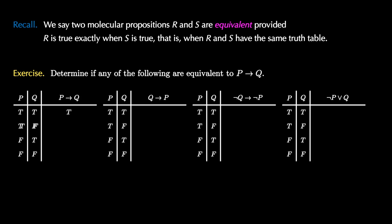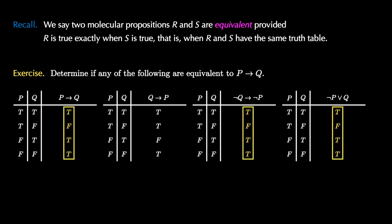Using the truth table for implies, we can rewrite p implies q as TFTT. Then q implies p has TTFT, NOT q implies NOT p is TFTT, and NOT p or q is TFTT. Inspection of these four truth tables shows that the first, third, and fourth are all identical. So these three propositions are equivalent. In particular, p implies q is equivalent to NOT q implies NOT p — this is known as the contrapositive law.